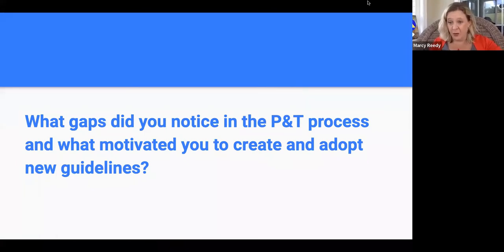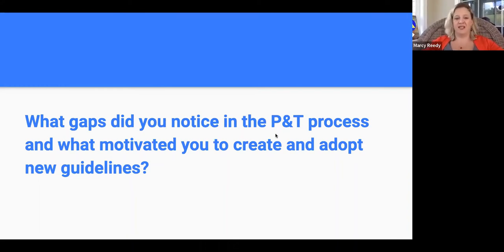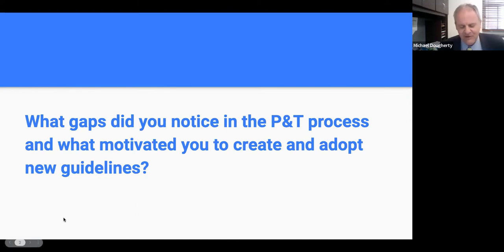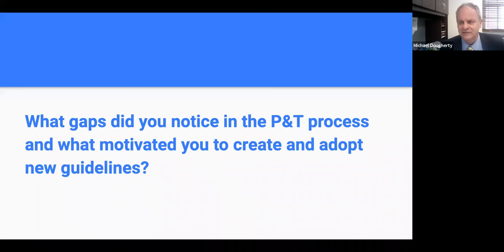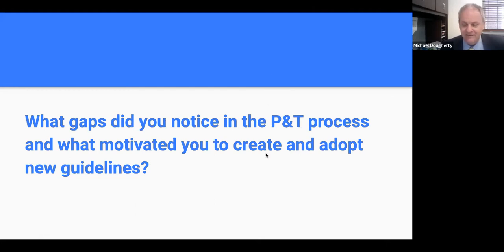The first question is: what gaps did you notice in the P&T process before you made your changes, and what motivated you to create and adopt these new guidelines? When I started this process, we were long overdue for revision of our criteria. Our criteria were last revised in 2006, and they probably reflected the historical perspective even before that. So they were a long time overdue, and we had to revise them by university guidelines. The biggest gap was that they were embarrassingly incomplete and outdated — they really relied on historical views of what it means to evaluate research.